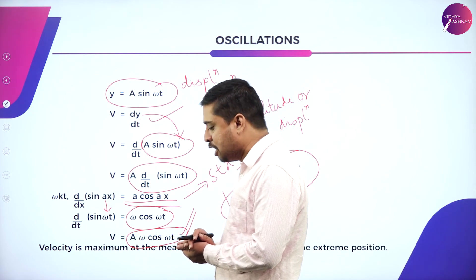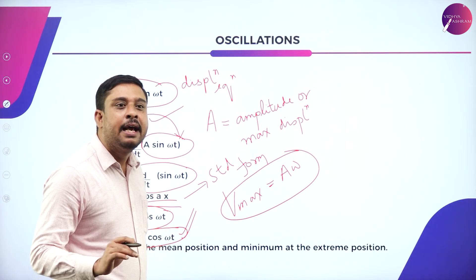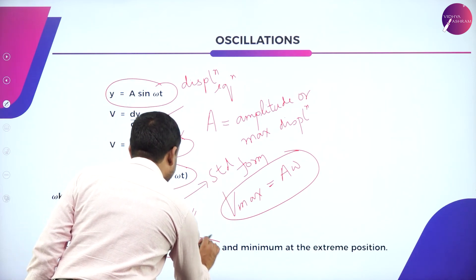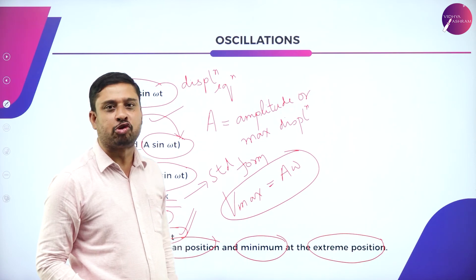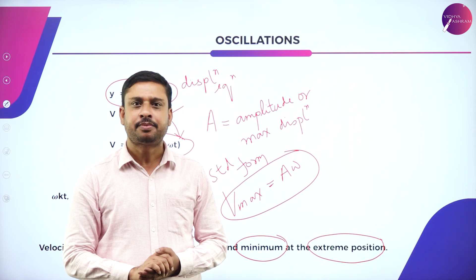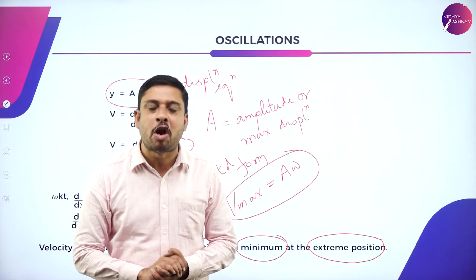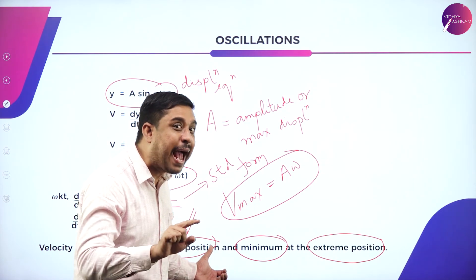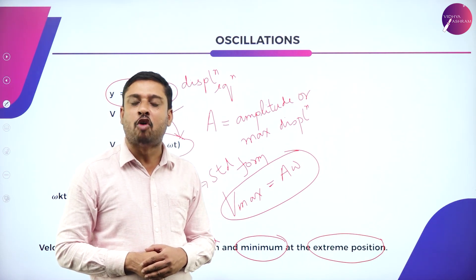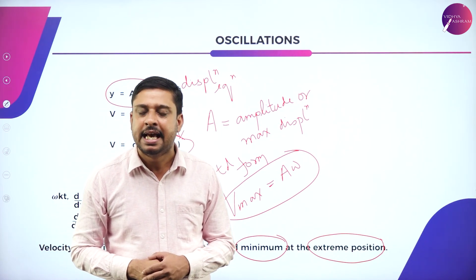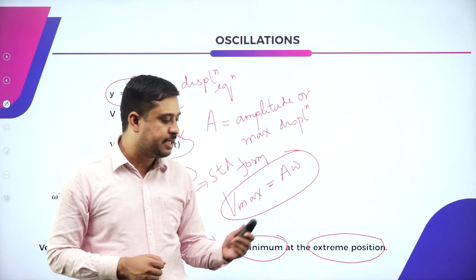Maximum velocity is omega A. Therefore, the velocity of a particle executing simple harmonic motion is maximum at the mean position and minimum at the extreme position. In today's session, I have derived expressions for displacement, velocity, and maximum velocity, and shown that velocity is maximum at the mean position and minimum at the extreme position. We have also derived the displacement equation. Next, we continue with force law and energy during SHM. Until then, have a nice time. Thank you.